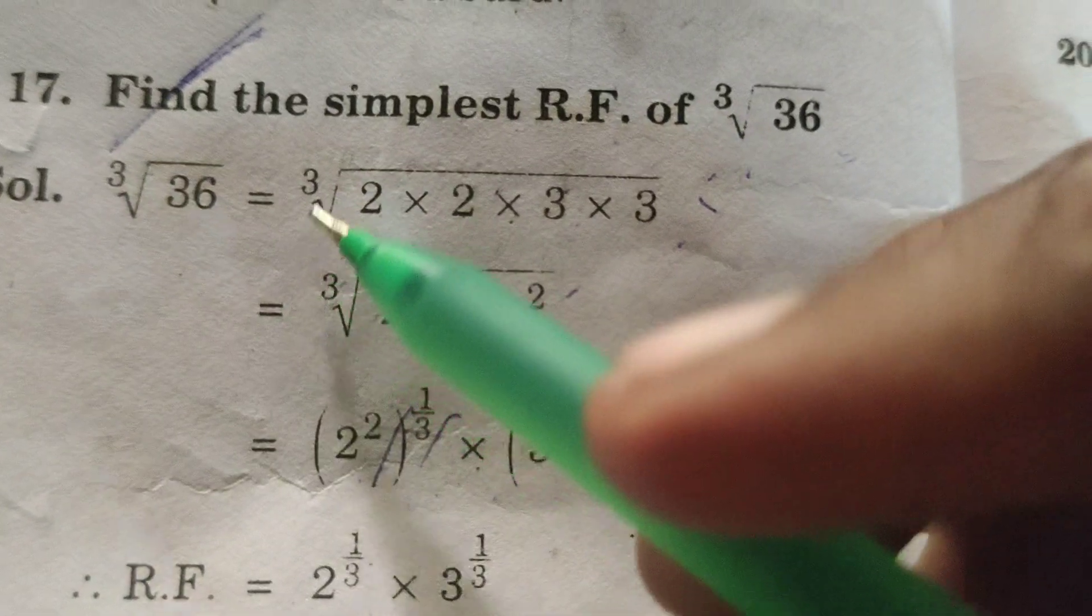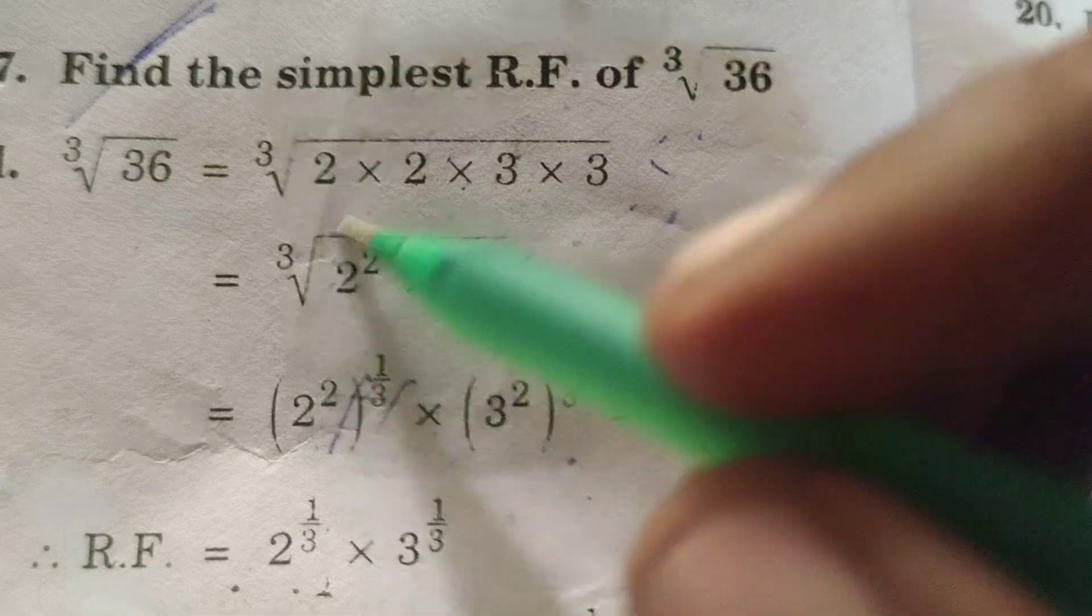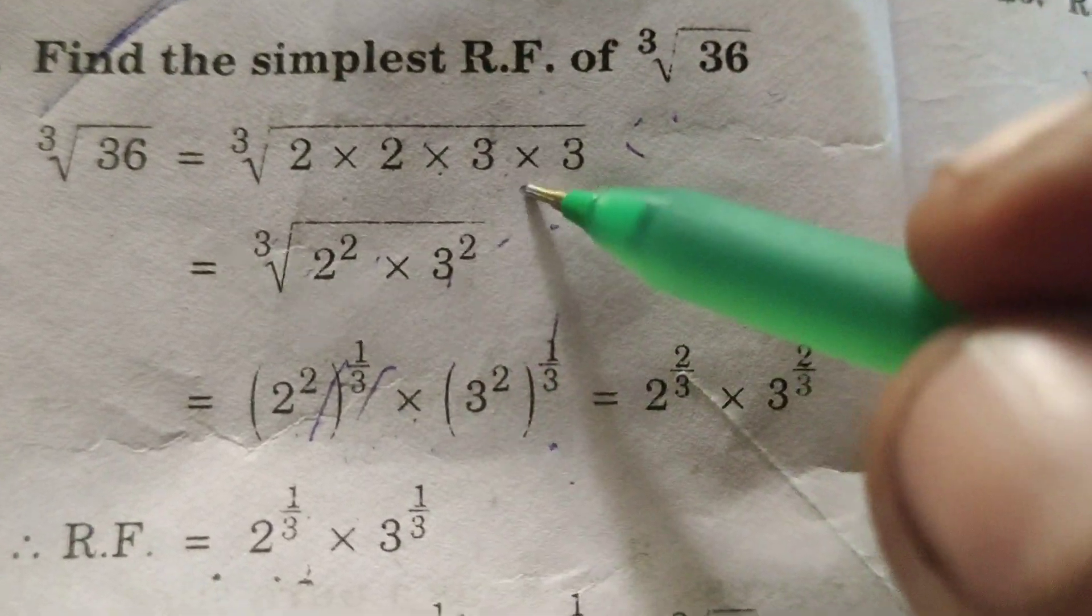∛36 equals ∛(2 × 2 × 3 × 3), which can be written as ∛(2² × 3²).